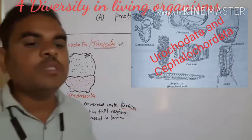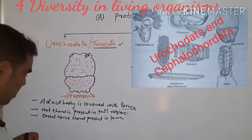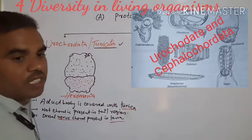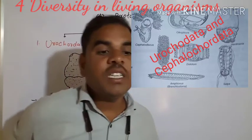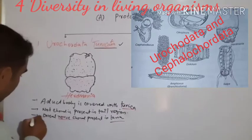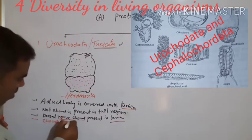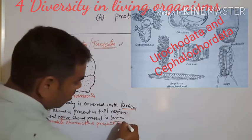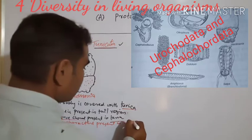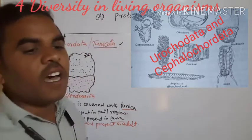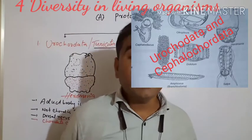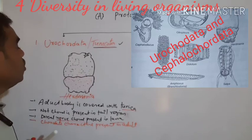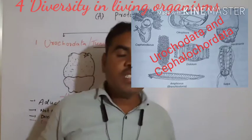In the larval stage, the nerve cord is present. Chordata characters are present in the adult animals. There is also a presence of numerous gill slits in the pharynx. Gill slits are present in this organism, the tunicator. These organisms are hermaphrodites — meaning both sex organs are present in the same organism.